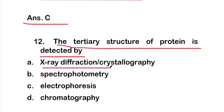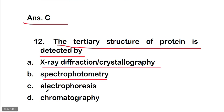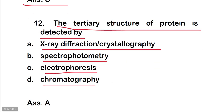Question 12: The tertiary structure of a protein is detected by — A) X-ray diffraction or crystallography; B) spectrophotometry; C) electrophoresis; D) chromatography. The right answer is option A — the tertiary structure of a protein is detected by X-ray crystallography or X-ray diffraction.